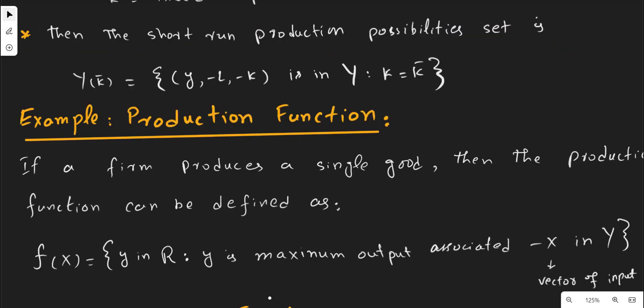Similarly, we can present the production function in standard language. First, we define the production function: it is the technical relationship between inputs and output. Suppose a firm is producing a single output Y, which is a function of a vector of inputs X.